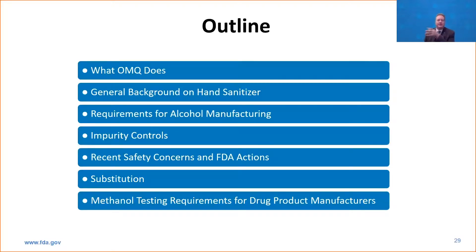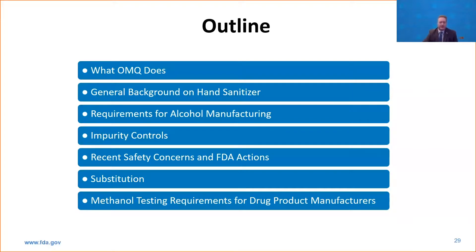Before I begin, I want to point out that all the slides we're presenting today will be shared with everyone. I typically put extra slides in for context so you can take them back later. You may see me skipping over some slides relatively quickly — I figure giving more information is better than less. Today I'm going to talk about what the Office of Manufacturing Quality, OMQ, does. We'll talk about hand sanitizer and the requirements for making alcohol for hand sanitizer during the pandemic.